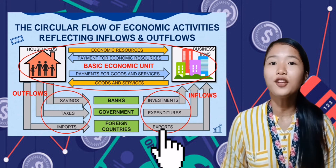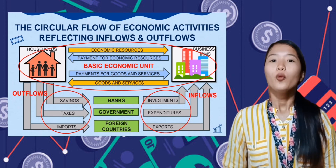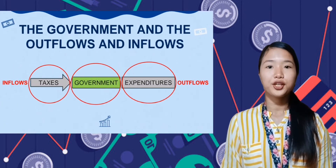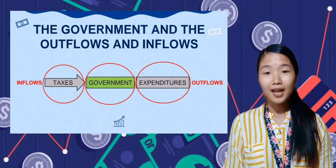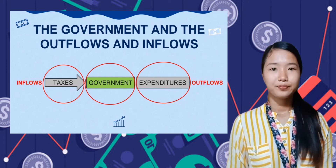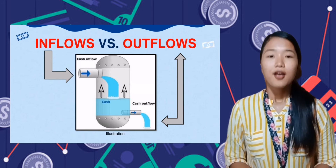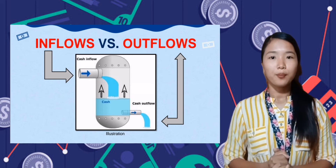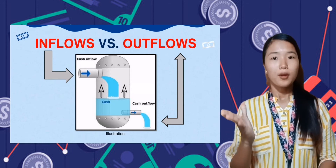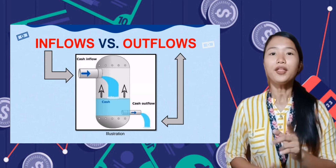That is why inflows could increase or amplify the performance of the country's economy. When you look at the figure, outflows and inflows are in respect to the basic economic unit. However, if we consider the government as a storage tank of inflows and outflows, then its inflow is taxes and its outflow is expenditure. It is important to determine the right amount of inflow and outflow — it should be balanced. If inflow is greater than outflow, there will be a spillover and wastage of resources. But if outflow is greater than inflow, we can expect a shortage of resources or the problem of scarcity.